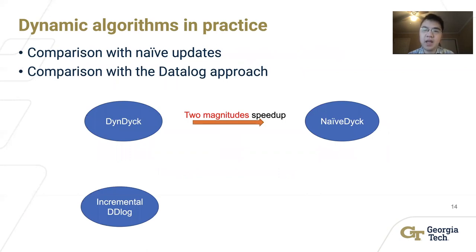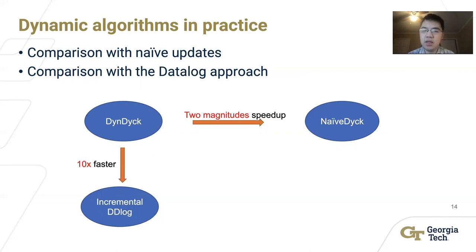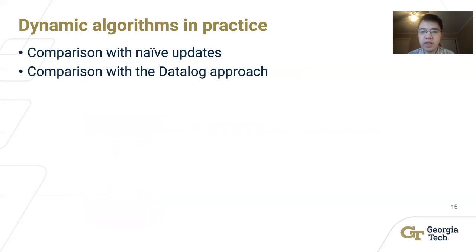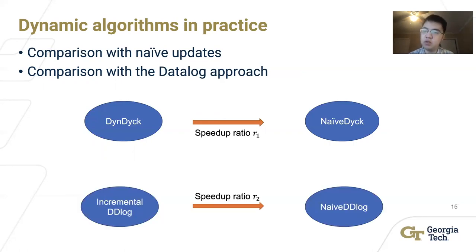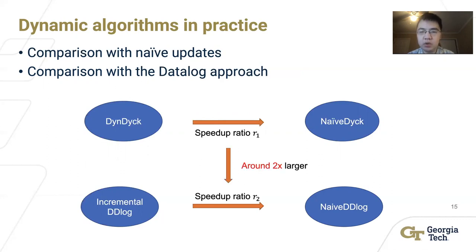We also implement Dyck-Reachability in Datalog and compare our algorithm with the state-of-the-art Datalog solver with incremental support. Our algorithm is more than 10 times faster than the Datalog solver in terms of absolute running time. In addition, we compare the speedup of our proposed algorithm over naive update with the speedup of the incremental Datalog solver over its naive update approach. The proposed algorithm achieves more than two times greater speedup than the incremental Datalog solver.